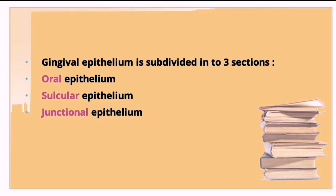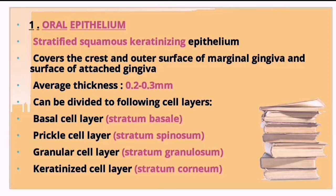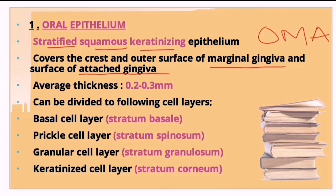Gingival epithelium is subdivided into three sections: oral epithelium, sulcular epithelium, and junctional epithelium. The oral epithelium consists of stratified squamous keratinizing epithelium covering the crest and outer surfaces of the marginal gingiva and the surface of the attached gingiva. Its average thickness is 0.2 to 0.3 mm.